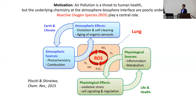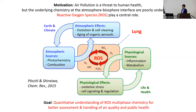ROS is also very important for our human body — it plays an important role in physiological processes, generated by inflammation and metabolism, and has effects on cell signaling and regulation. We do need ROS in our body to be alive, but if we have too much, it can cause so-called oxidative stress. The key question is whether ROS processes in the atmosphere and physiology are coupled at the interface — namely, the lung.